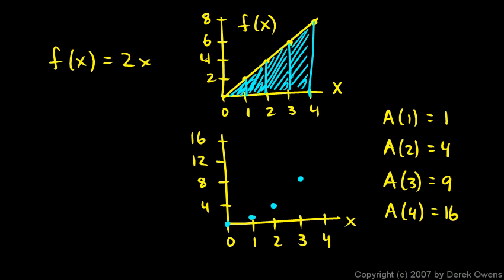And A of 4 is 16. And even without seeing the graph, you've probably recognized this function here, A of x, is the function x squared.